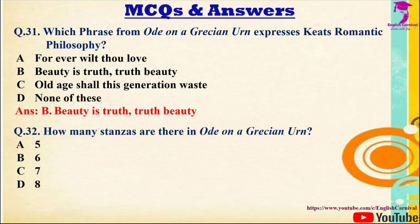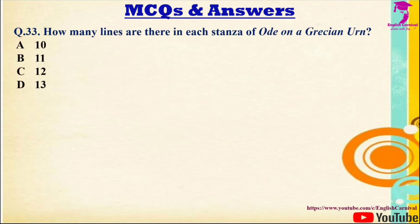Question 32: How many stanzas are there in Ode on a Grecian Urn? The correct answer is A — five stanzas. Question 33: How many lines are there in each stanza of Ode on a Grecian Urn? The correct answer is A — ten lines in each stanza.